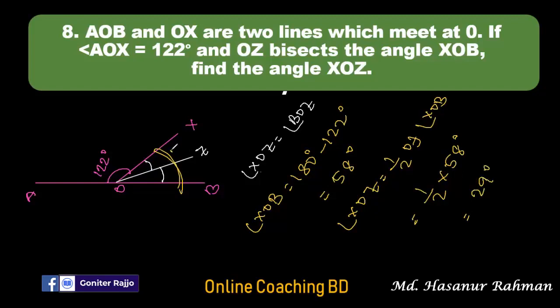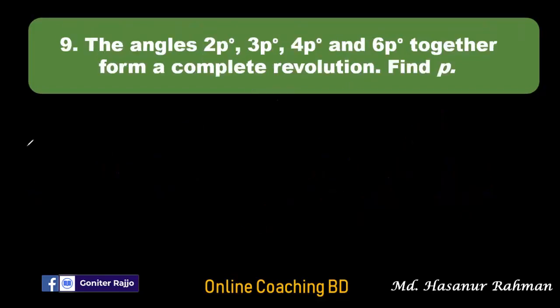So if we divide 58 by 2 we get 29 degrees. Each one will be 29 degrees — 29 plus 29 is 58 degrees. So angle XOZ equals 29 degrees.